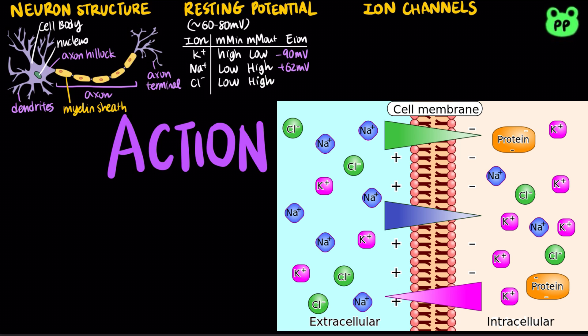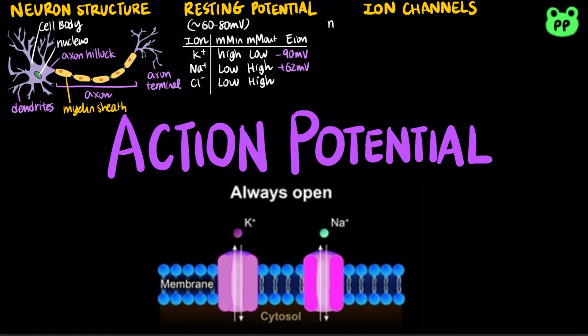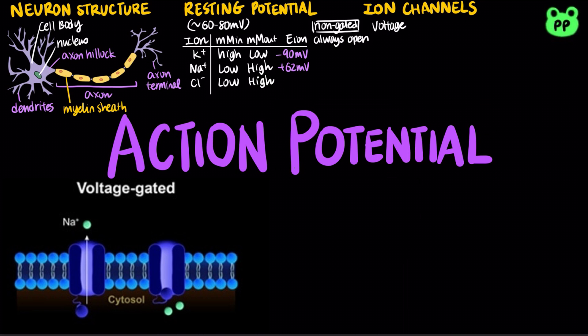The electrochemical gradient involves two components: a chemical force, which is the ion's concentration gradient, and an electrical force, which is the effect of the membrane potential on the ion's movement. There are four main types of ion channels. Non-gated ion channels are always open. Voltage-gated ion channels are activated by changes in membrane potential near the channel. Due to the electrochemical gradient, the opening of voltage-gated potassium channels would lead to hyperpolarization, whereas the opening of voltage-gated sodium channels would lead to depolarization.